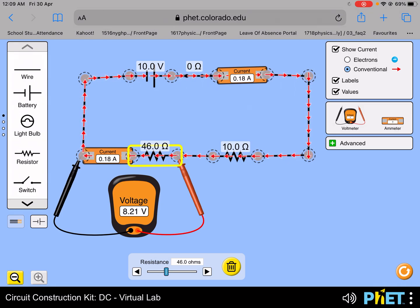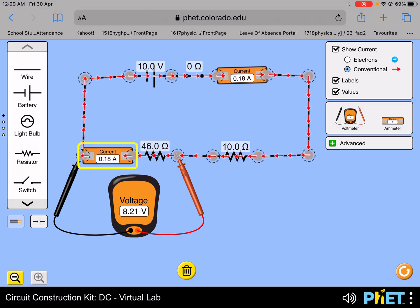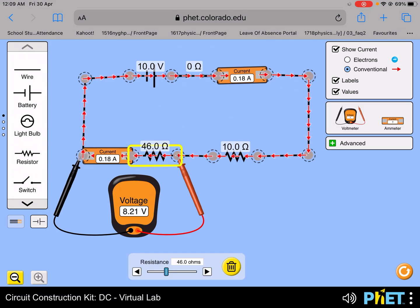So despite a decrease in the current, the PD across the rheostat is actually increasing with increasing resistance.